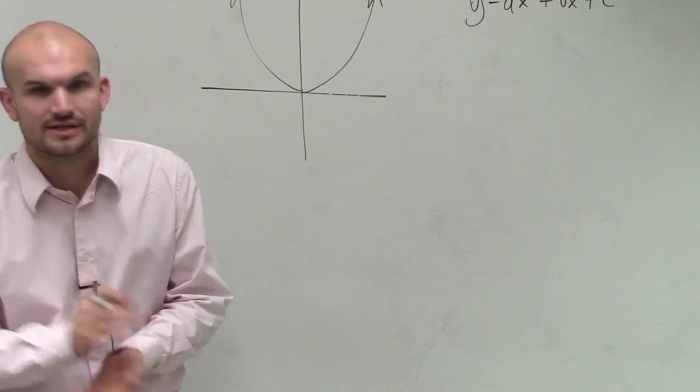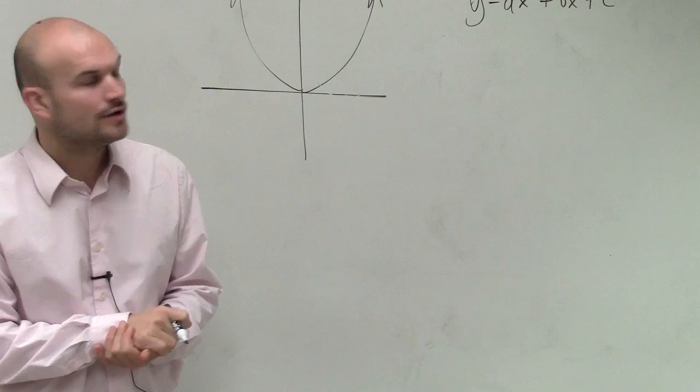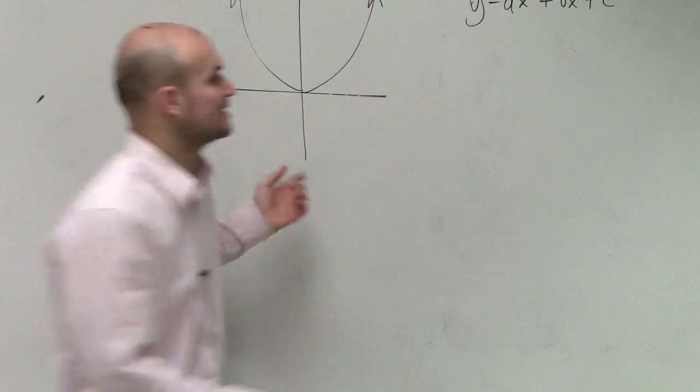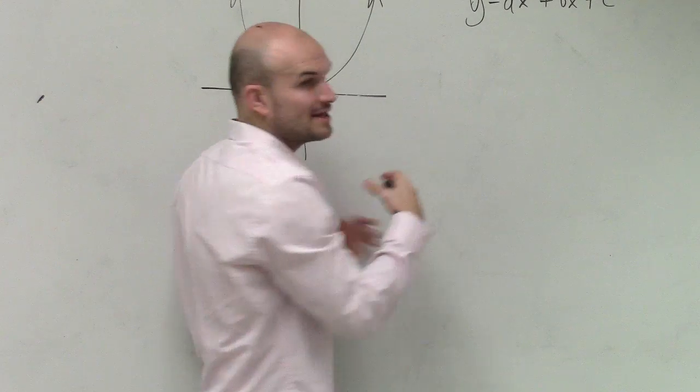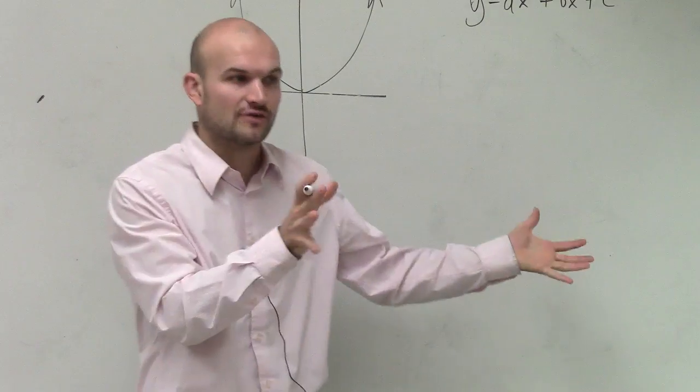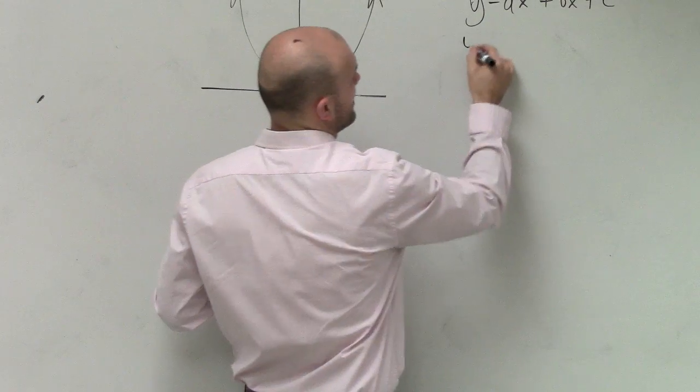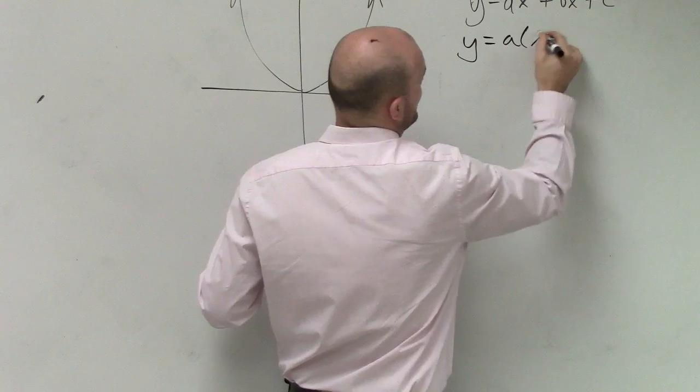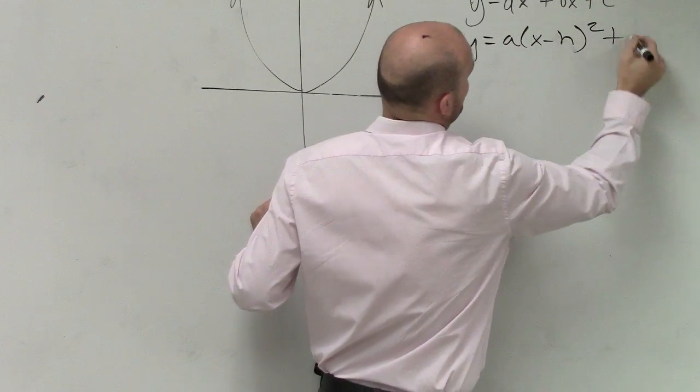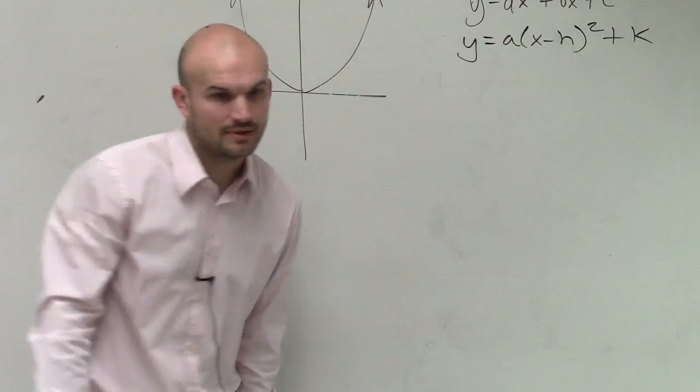And then what we also did in this class is we looked at a different form of a quadratic. And that was your vertex form. Remember, we worked on completing the square to be able to find the vertex and the transformations. And that was equal to y equals a times x minus h squared plus k.